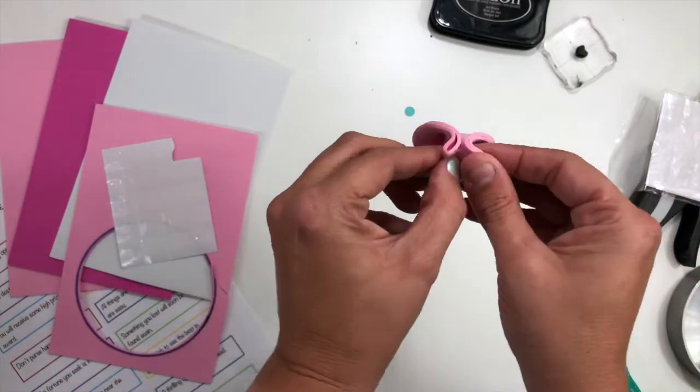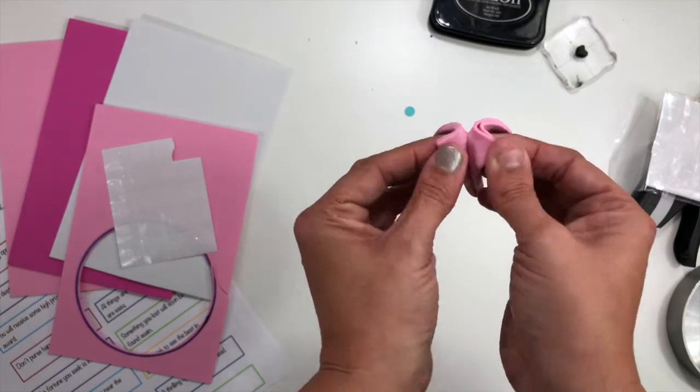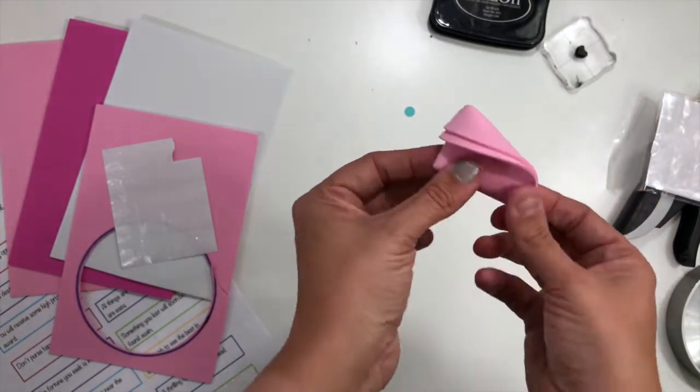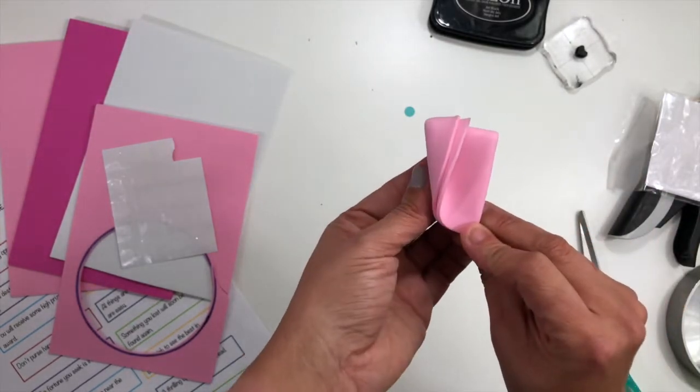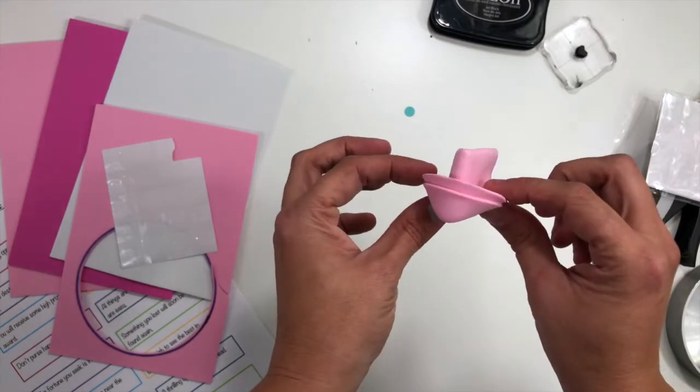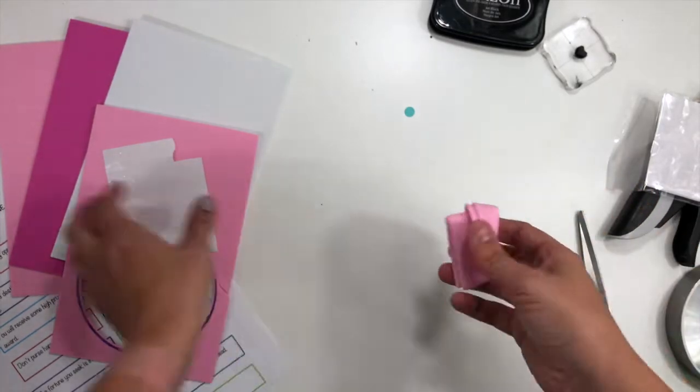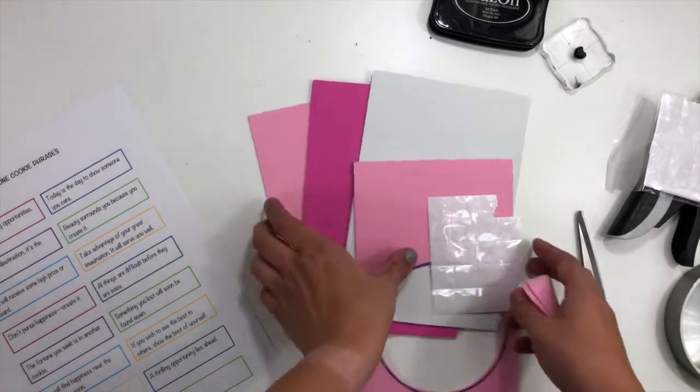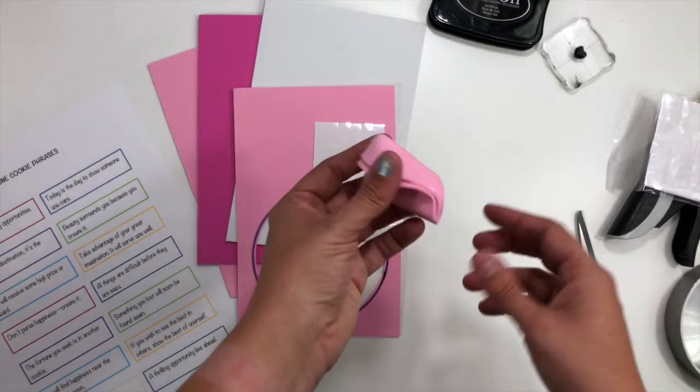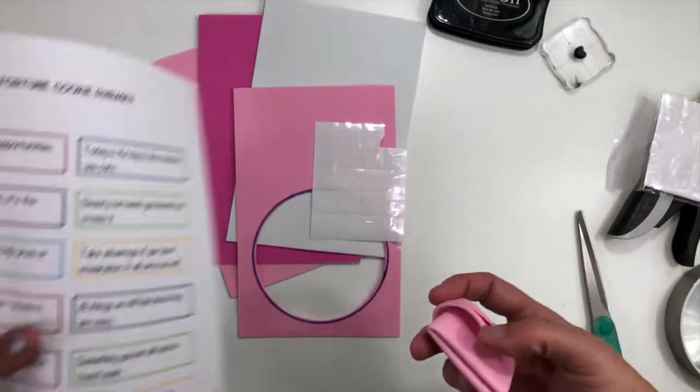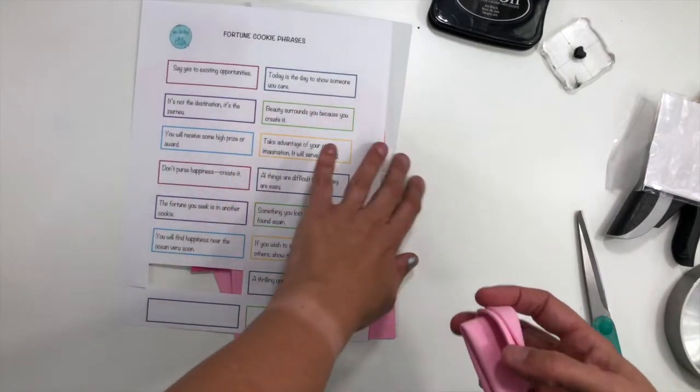That's really all there is to it. That one little sticky dot is going to hold these completely together and make our little fortune cookie. Easy peasy. All you need is that fun foam, your sticky squares, and then this cuttable printable that has all the phrases.